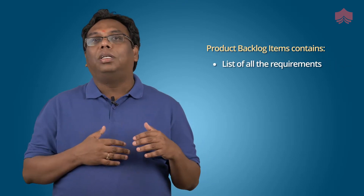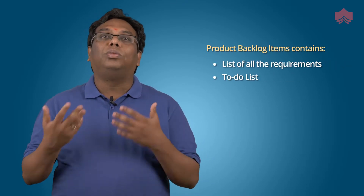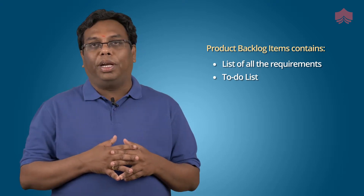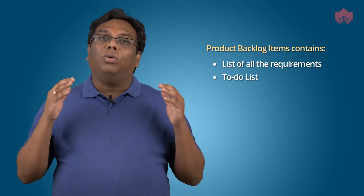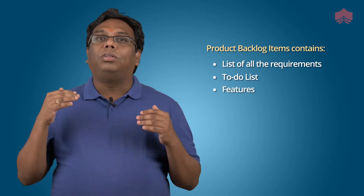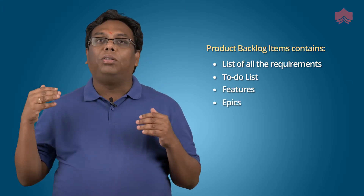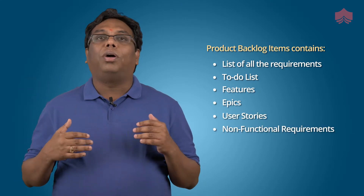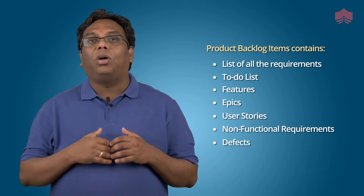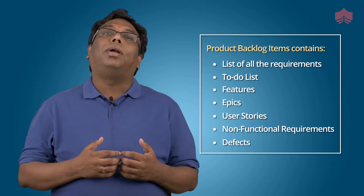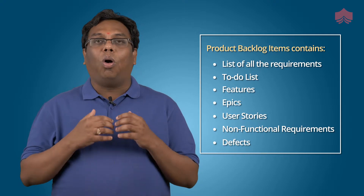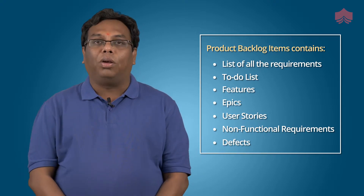What exactly does this product backlog contain? Your product backlog is going to contain the list of all the requirements — the to-do list which has to be there in the software product. You talk about features, you talk about epics, you talk about user stories, you talk about non-functional requirements, you talk about defects. All these things will be listed as part of the product backlog.